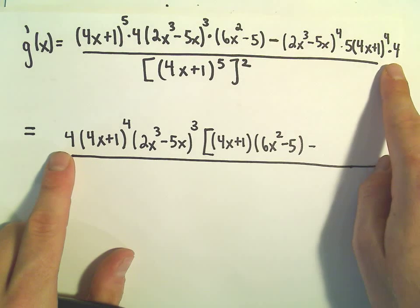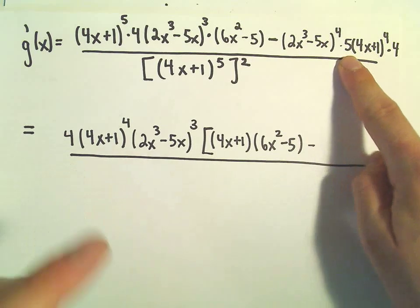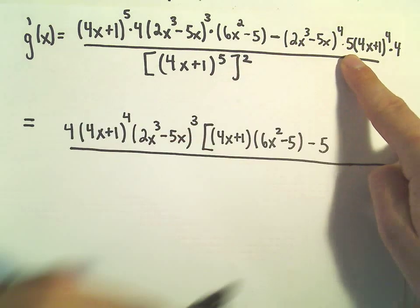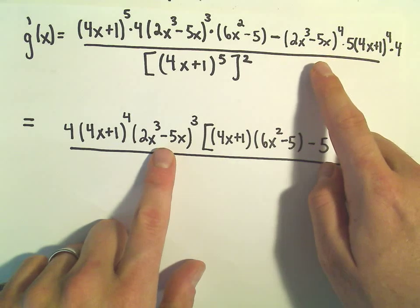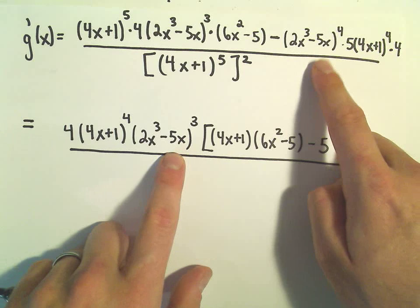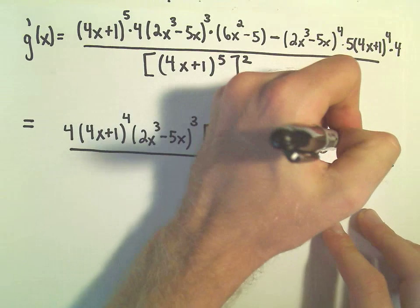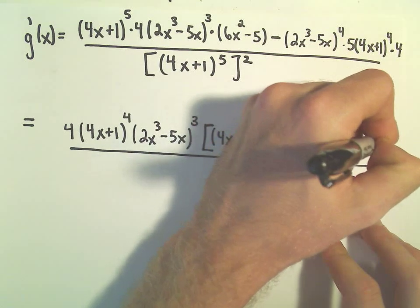So we pulled the 4 out. We pulled the 4x plus 1 to the 4th out. We didn't pull the 5 out, so let's stick the 5 in there before I forget that. We pulled out a 2x cubed minus 5x to the 3rd, but we need 2x cubed minus 5x to the 4th, so we'll have to multiply by another 2x cubed minus 5x.